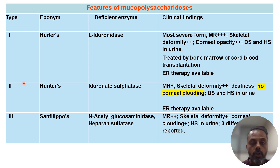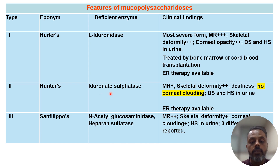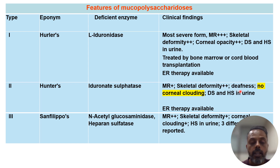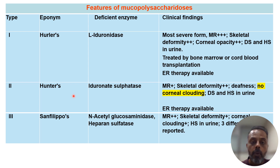Type 2 mucopolysaccharidosis is Hunter's syndrome, inherited as an X-linked recessive trait. The enzyme deficient in Hunter's syndrome is iduronate sulfatase. A key characteristic feature of Hunter's disease is that it is NOT associated with corneal clouding — remember this for solving MCQs. Apart from that, skeletal deformity, mental retardation, and deafness will be present. There is excretion of dermatan sulfate and heparan sulfate in the urine. Enzyme replacement therapy is available for treatment.